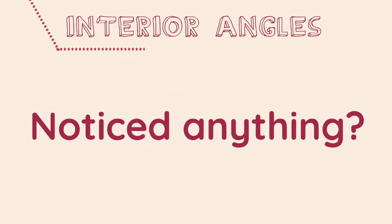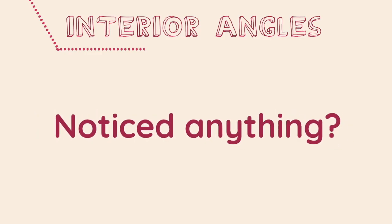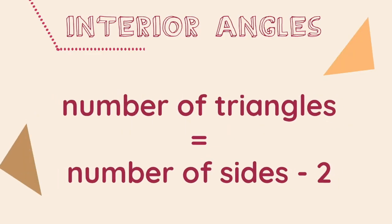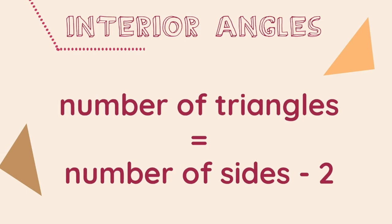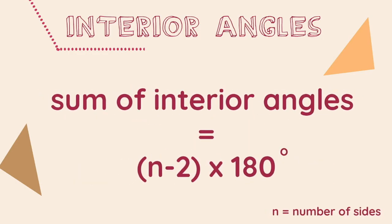Noticed anything? The number of triangles which can fit inside any polygon will always be two less than the number of sides. So now we can create a formula which we can use for any polygon to find the sum of the interior angles.